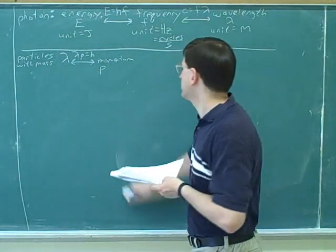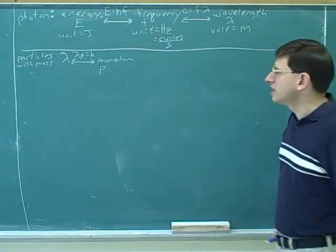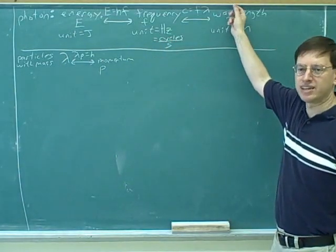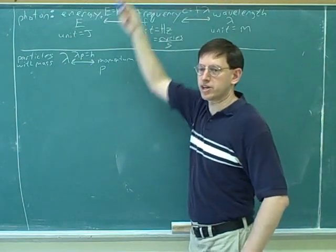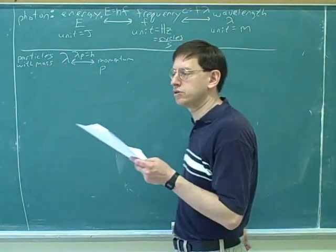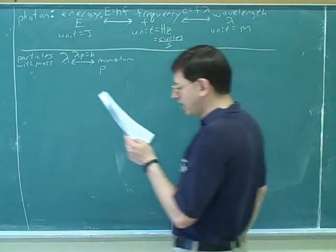Alright, and you can already see where students start to get messed up here. Because notice, how do you find the wavelength of a particle with mass is totally different from how you find the wavelength of a photon. If you're working with a photon, you would use this flowchart. But if you're working with something with mass, like an electron, you would use this flowchart. So there's two completely different charts.